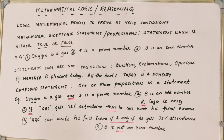The outcome of every statement can either be true or false. For example, where it is false: 5 is an even number — that is false. 2 is an odd number — that is false. So all of these statements are called mathematically acceptable statements.